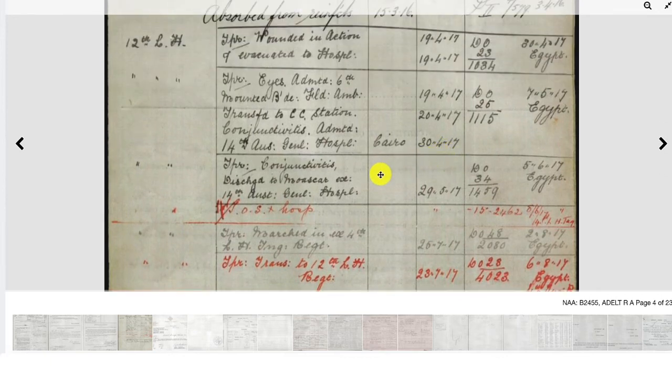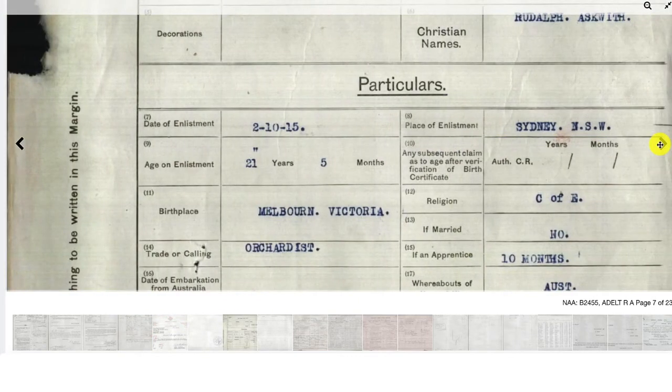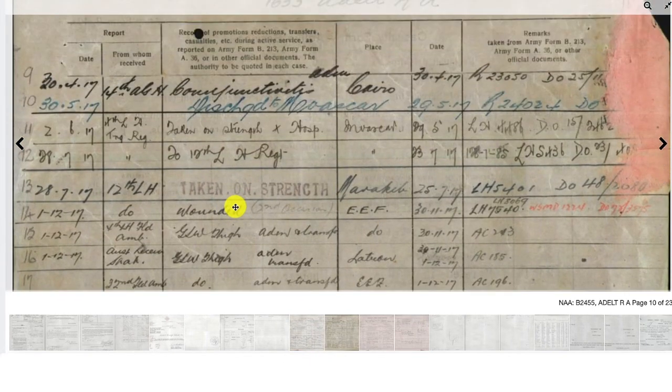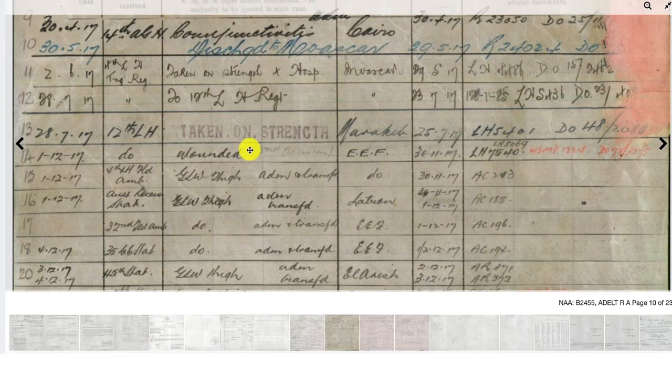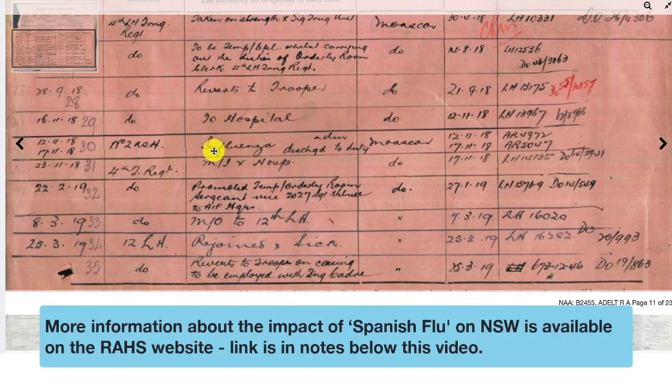Scrolling further through the record, we find that Rudolph was wounded again in December of 1917 with a gunshot wound to the thigh, and was admitted to hospital again. Something else interesting: it's recorded that Rudolph contracted influenza in November of 1918. We can take a guess that this may have been Spanish flu, though we can't be certain.